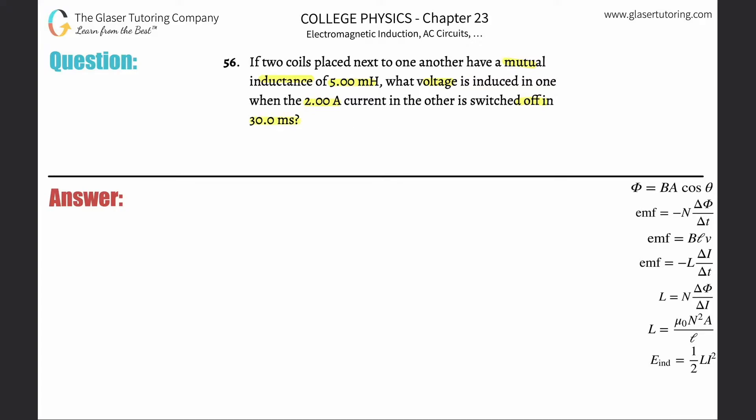Take a look at number 55, I talked about where this formula comes from. EMF₂ equals the negative mutual inductance multiplied by the change in current through the first divided by the change in time.